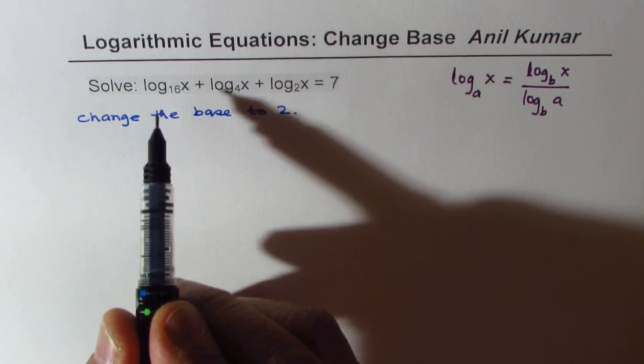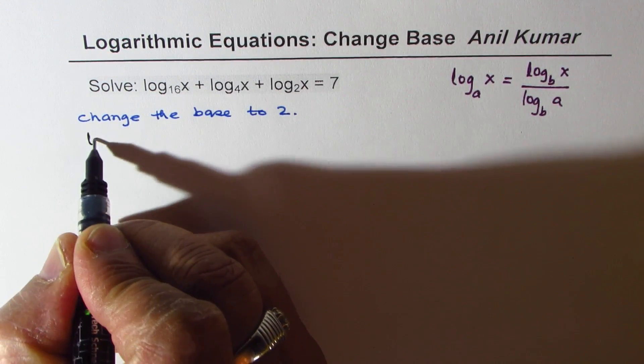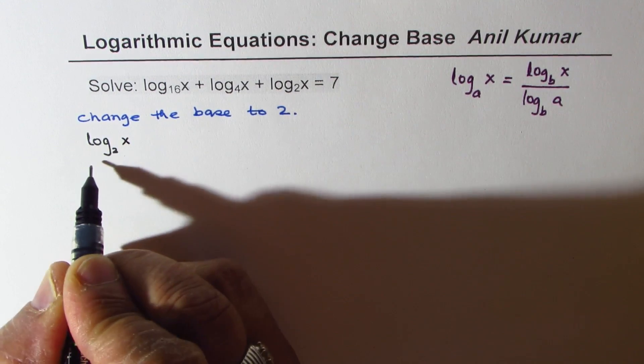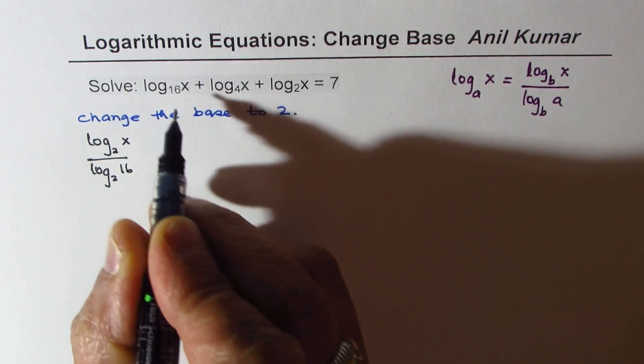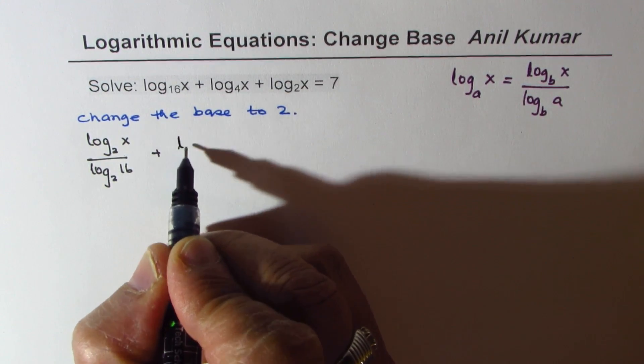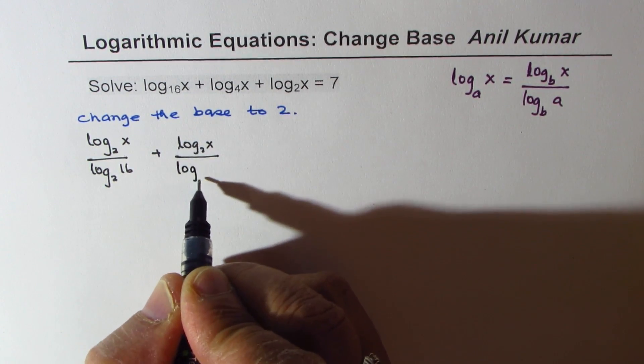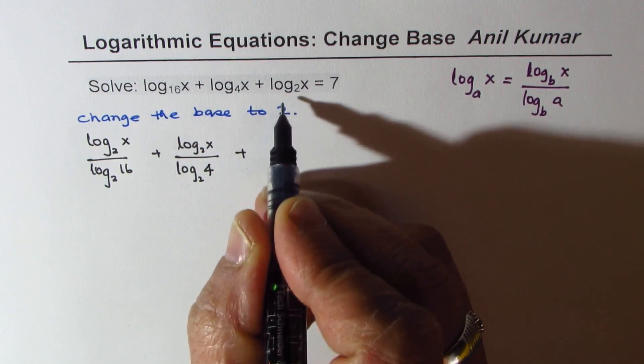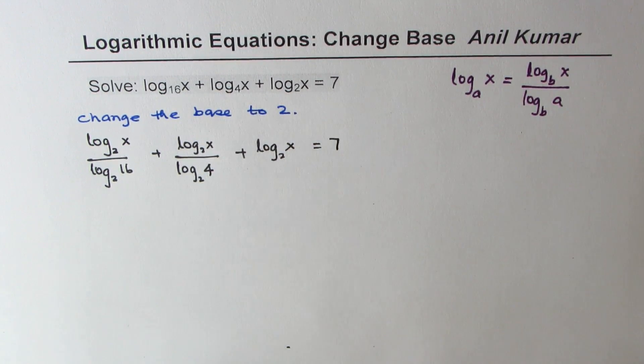Let's rewrite the equation with a different base. Log base 16 of x can be written as log base 2 of x divided by log base 2 of 16. That is how you change the base. Next term log base 2 of x divided by log base 2 of 4. And then we already have log base 2 of x, everything equal to 7.